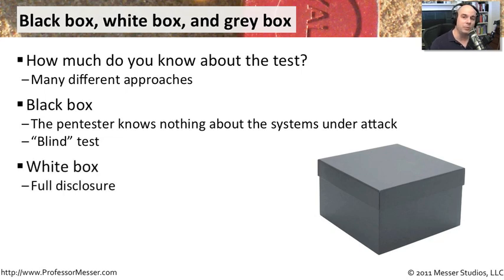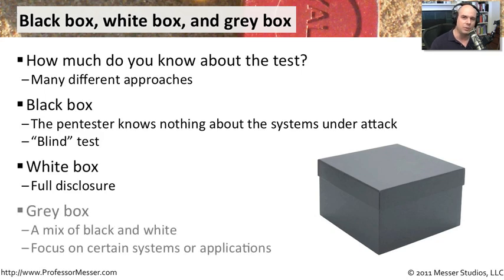The exact opposite would be a white box, where you're giving someone a network map — maybe you already know the IP addresses of your database servers and what version numbers they happen to be — and you might be doing very specific vulnerability checks and penetration tests against all of those systems. A gray box, obviously, would be something in between: you know a little bit about the network and systems but not everything, and the tests may be much broader to determine exactly what might affect those systems in your environment.